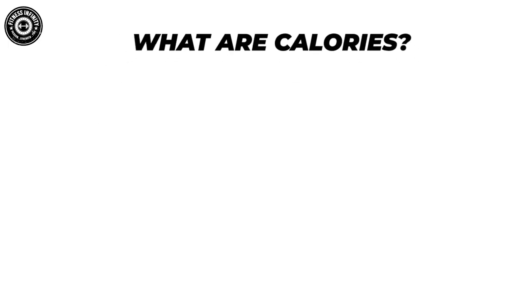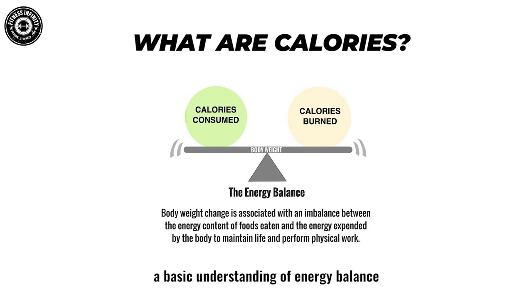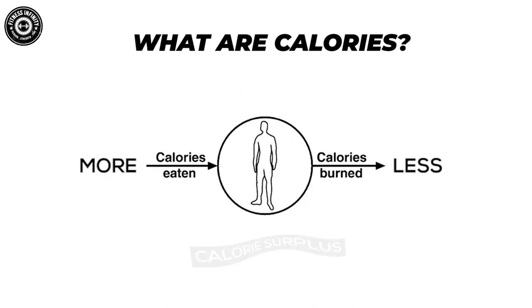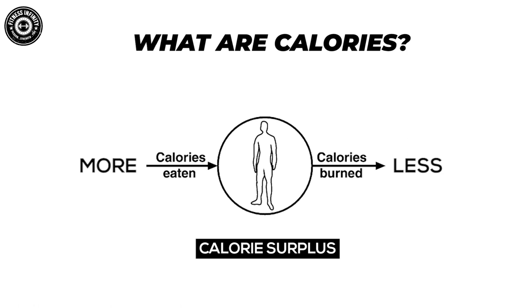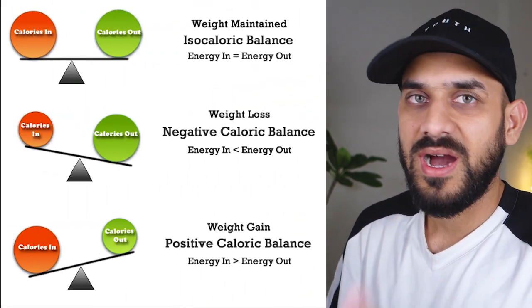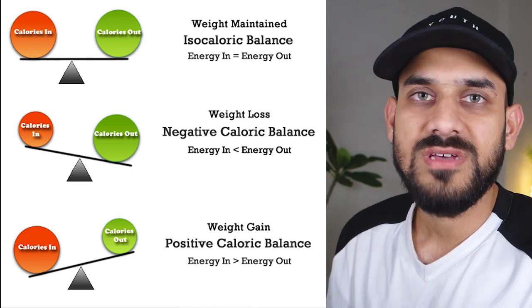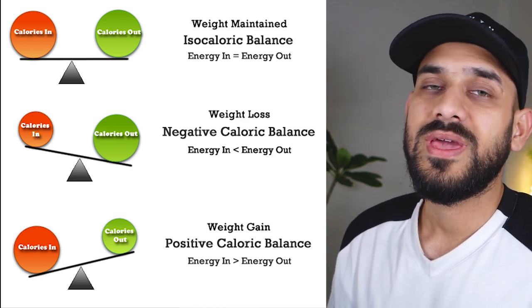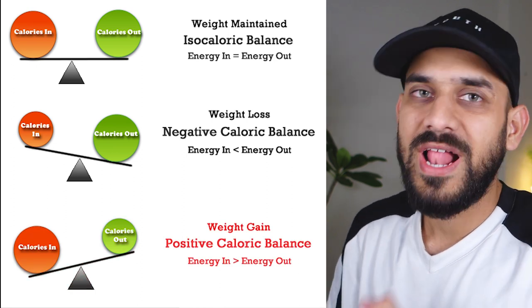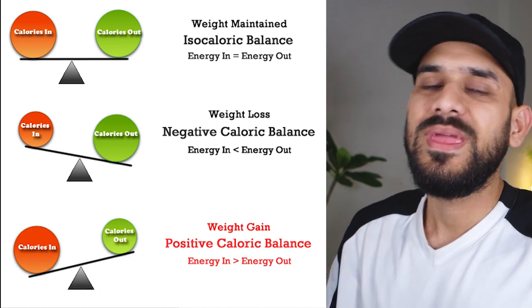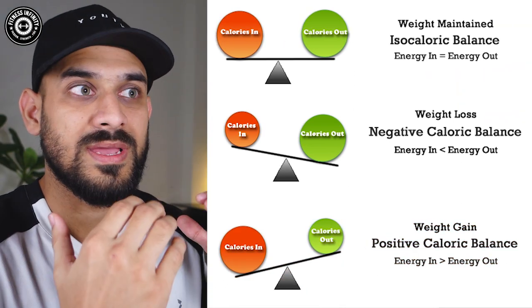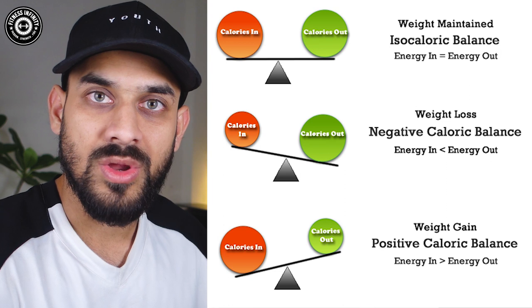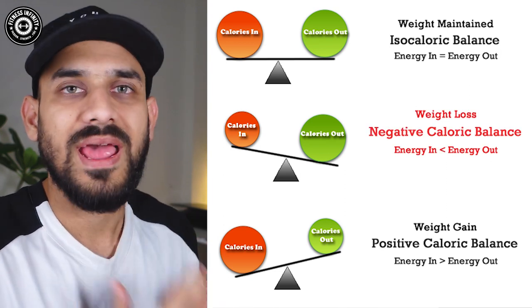But why are we talking about calories and macros in the first place? The reason is pretty simple. Because if you take in more calories than your body requires to maintain life and perform any kind of physical work, you are in a net calorie surplus. Your body needs a certain amount of calories in a day. If you consume more calories than your body needs, you will be in a net calorie surplus state, and those extra calories are stored mainly in the form of fat. And if you spend more calories than you consume, then you are going to be in a calorie deficit state.